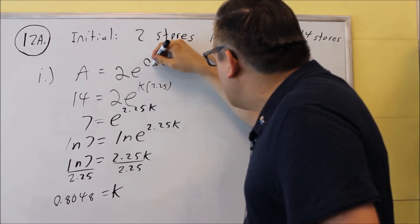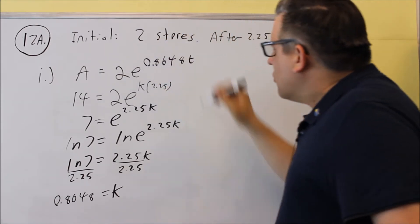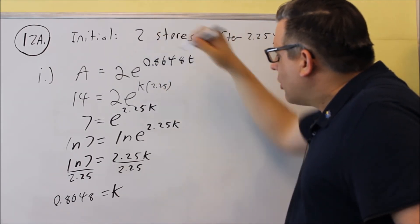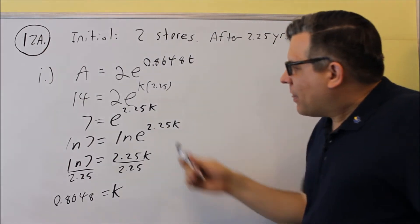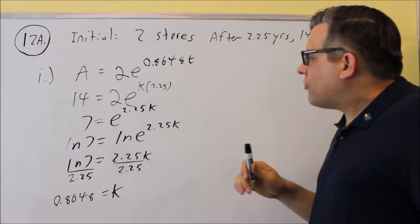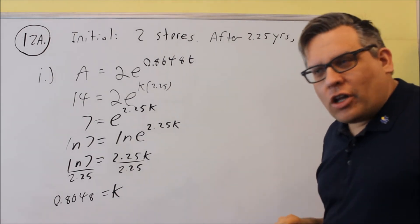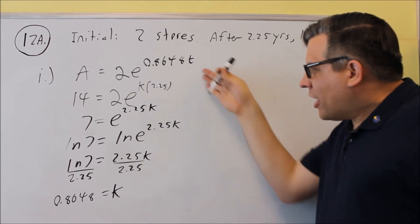this is now going to be the growth formula that we're going to use. So this is going to be the answer for part I, 2e^(0.8648t). So you need the whole equation there for credit. So that is part A.